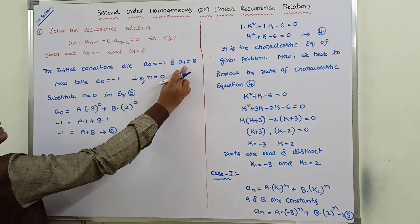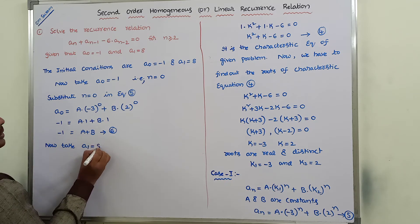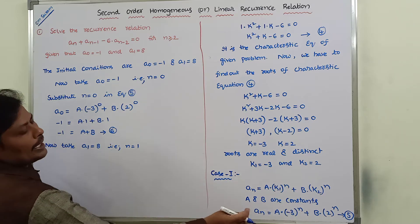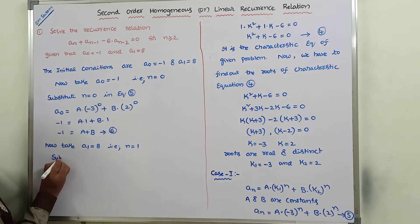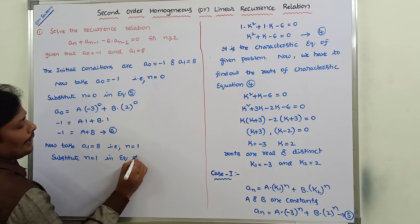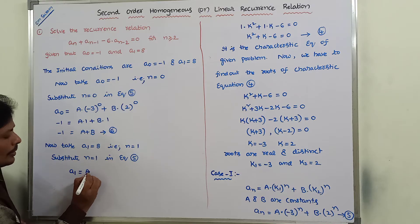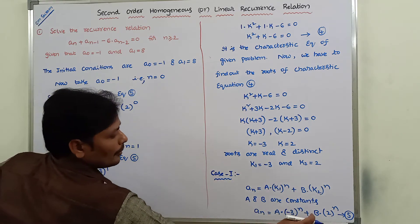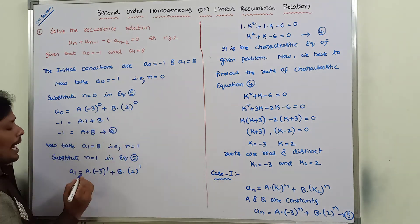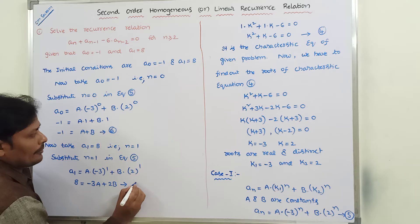For the second initial condition, a₁ = 8, that is n = 1. Substitute n = 1 in equation 5: a₁ = A·(-3)¹ + B·2¹ = -3A + 2B. Since a₁ = 8, we get -3A + 2B = 8. This is equation 7.